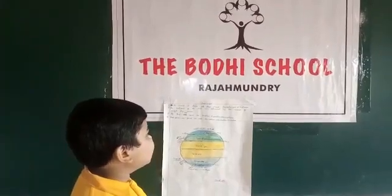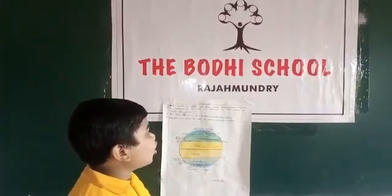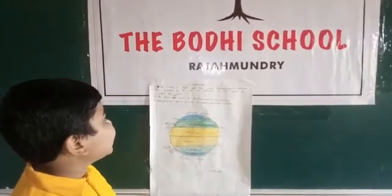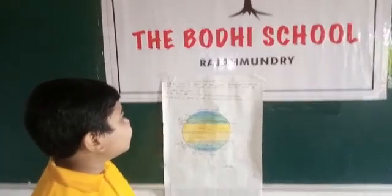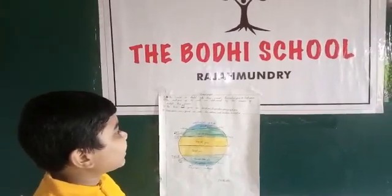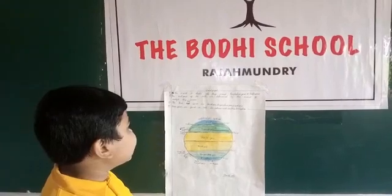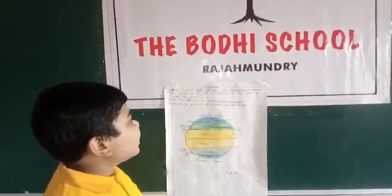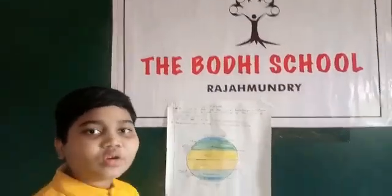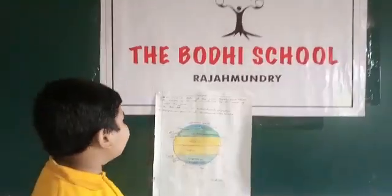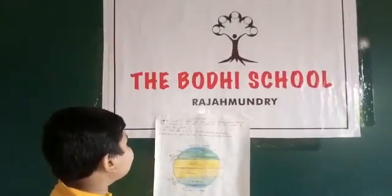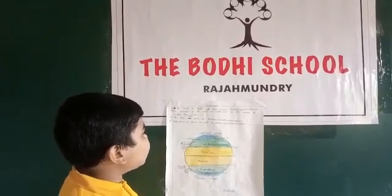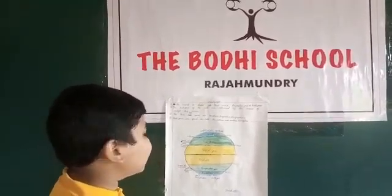The world is divided into broad temperature zones, or heat zones. The heat zones of the earth are determined by the amount of sunlight received. The heat zones include the torrid zone, the temperate zones, and the frigid zones. These zones are found in both the northern and southern hemisphere.